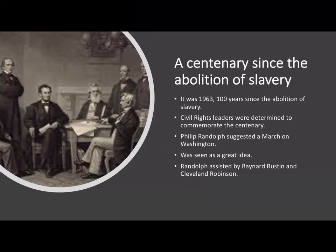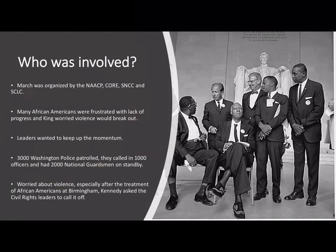Everybody thought this was a great idea and Randolph was given close assistance by Bayard Rustin and Cleveland Robinson. Many groups became involved in the organisation, such as the NAACP — the National Association for the Advancement of Coloured People — CORE, the Congress of Racial Equality, SNCC, the Student Nonviolent Coordinating Committee, and the SCLC, the Southern Christian Leadership Conference.